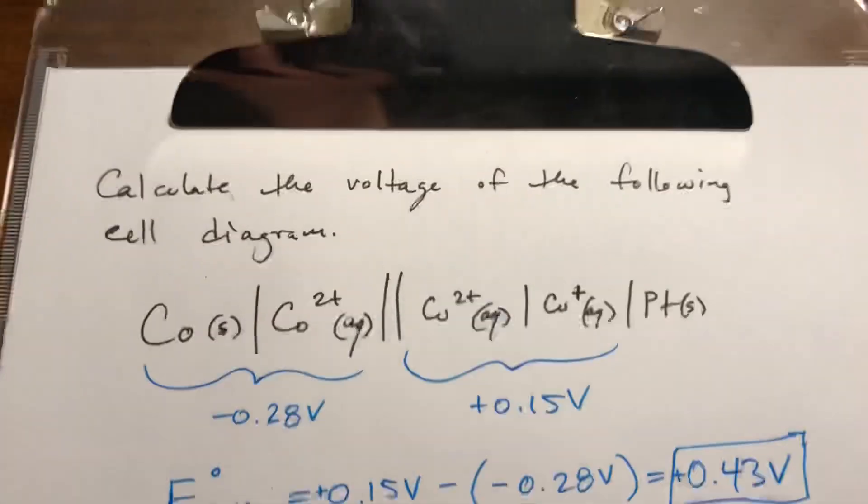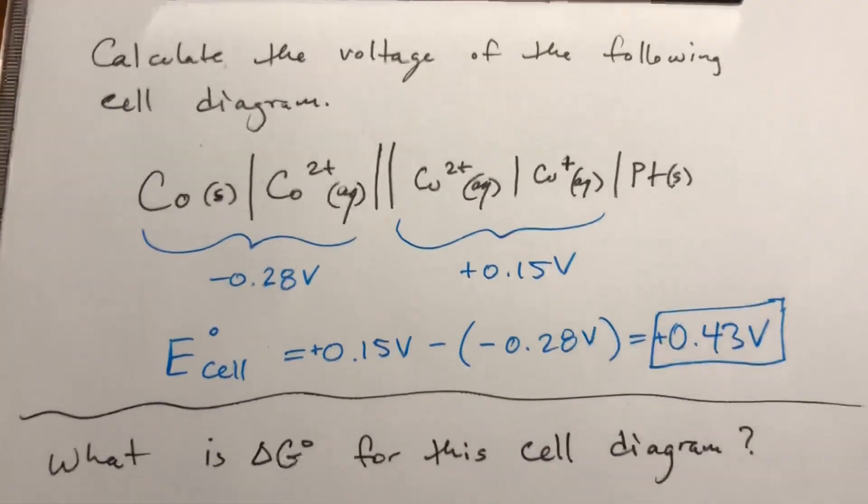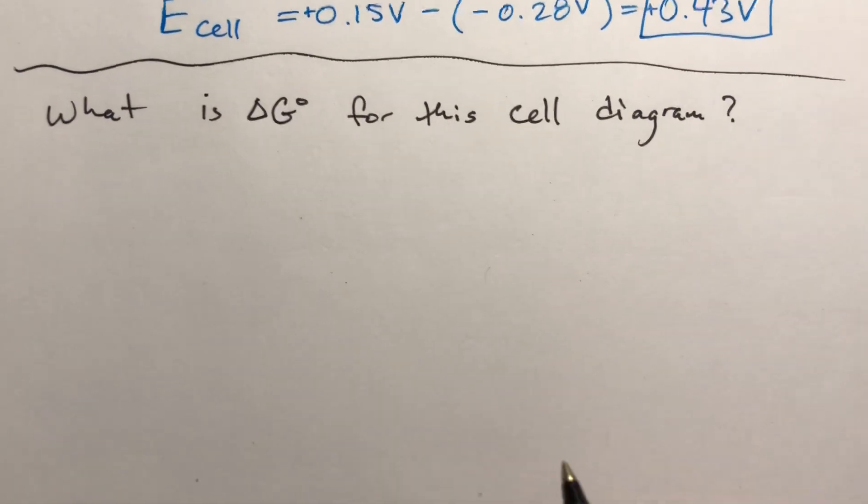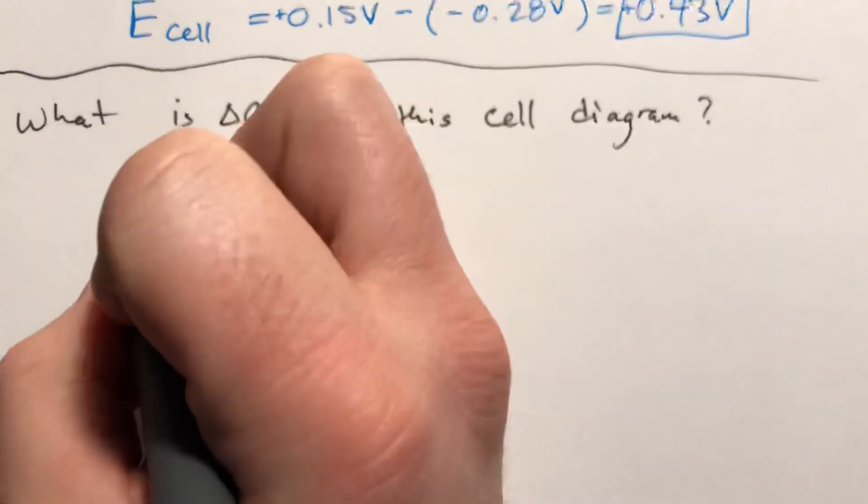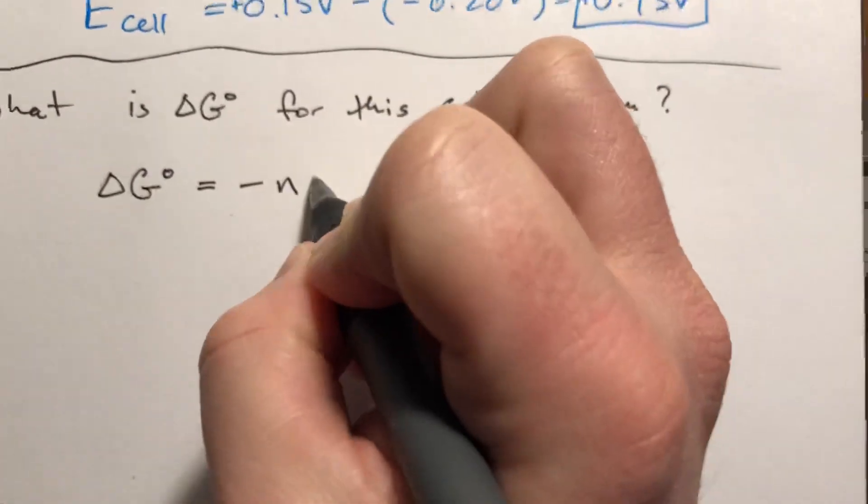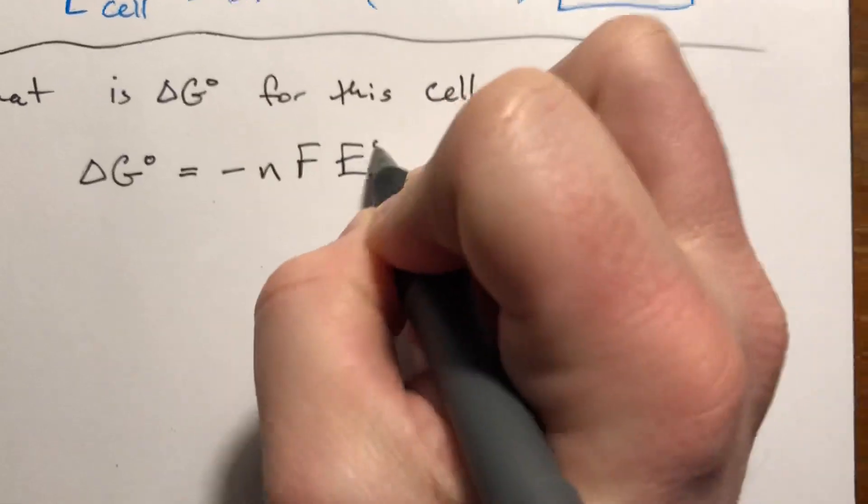We want to know, since this is a reaction that could be at equilibrium, and there should be an energy component to this, what is delta G for this reaction? The equation for this is delta G equals negative n F E sub cell.